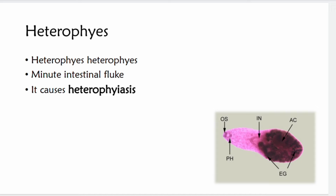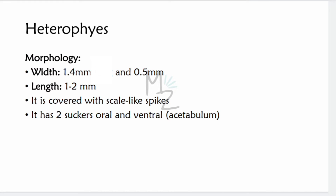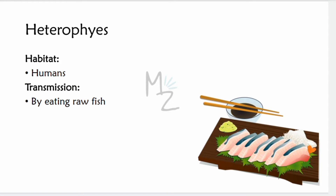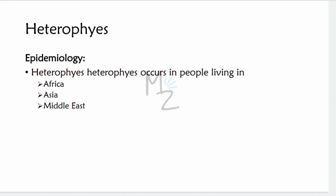The third trematode is Heterophyes heterophyes, a minute intestinal fluke responsible for causing heterophyiasis. Morphology: it is 1.4 mm × 0.5 mm wide and 1–2 mm long, covered with scale-like spines. It has two suckers: one oral and one ventral, termed the acetabulum, which aids attachment to the host. Human transmission occurs by eating raw fish or aquatic vegetation. Epidemiology: Heterophyes heterophyes occurs in people living in Africa, Asia, and the Middle East.